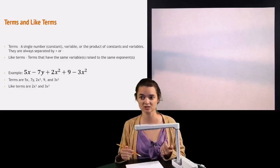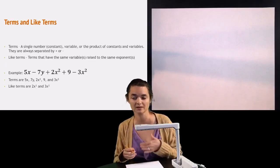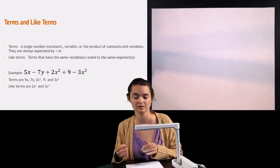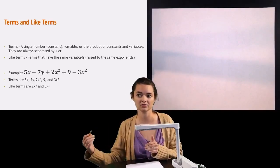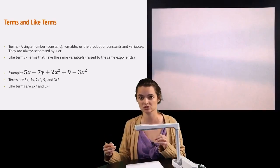So the 5x is a term minus, 7y would be another term, and then you have a plus sign which separates it from the 2x squared, which would be another term, and then 9 would be a term, and 3x squared would be a term. So you notice that they're all separated by that addition or the subtraction.